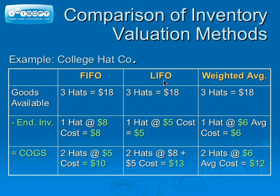Under LIFO, the most recent purchases were sold. Therefore, the ending inventory would be one hat purchased at $5, and the cost of goods sold would include the most recent purchase at $8 and the purchase before that at $5, bringing the total to $13. Under weighted average, the average cost of three hats is $6 each, calculated by taking $18 dividing by three hats. Ending inventory would be $6 for one hat, and cost of goods sold would be $12.